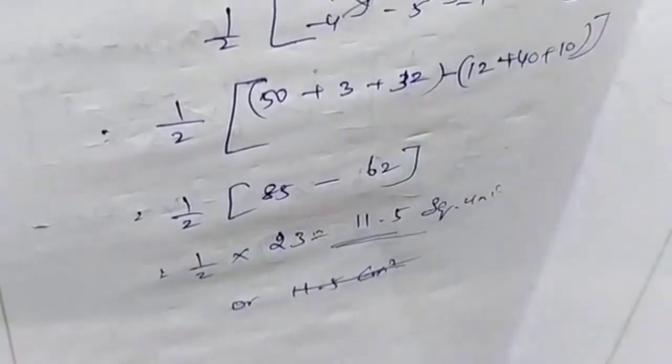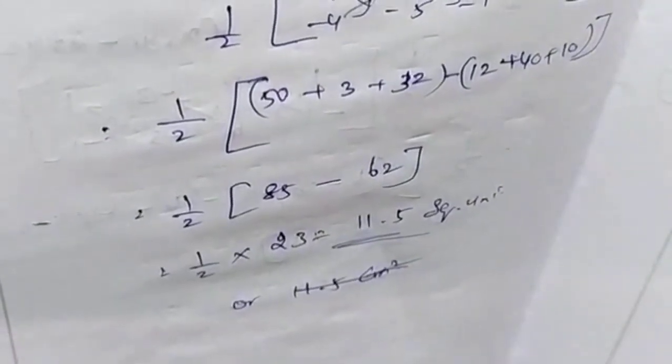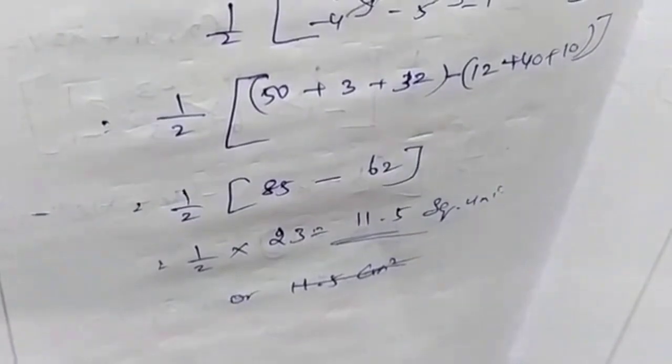One by two into 11.5. The answer is 5.75 square units. Thank you.